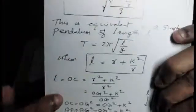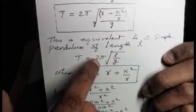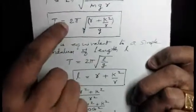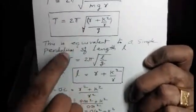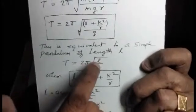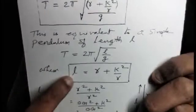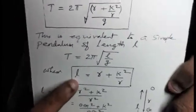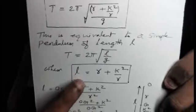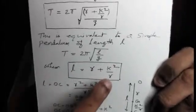This is the period: T equals 2pi root of (r + k²/r) divided by g. The equivalent length, or length of equivalent simple pendulum, is l equals r plus k squared over r.